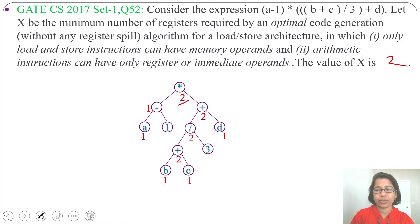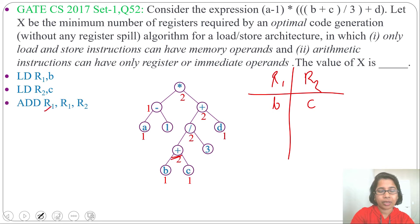Let me write machine instruction for this expression. First, I need to load B into one register. Then I need to load C into one register. Let load R1 B. Now R1 contain B. Then load R2 C. Next, we need to do this addition. So add R1 R1 R2. Means this R1 will hold the addition.